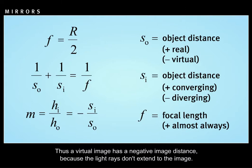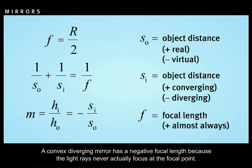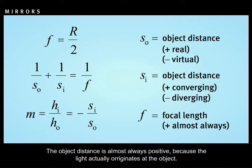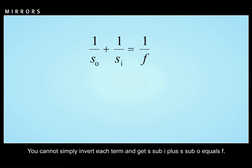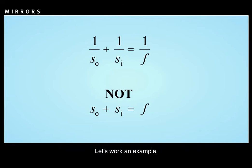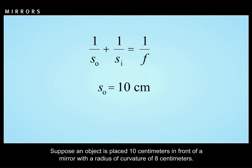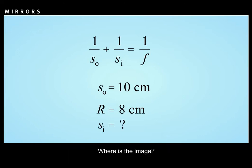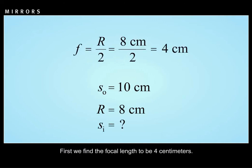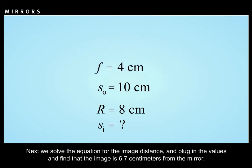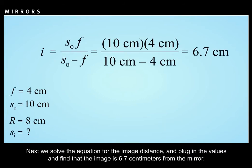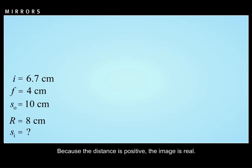Thus, a virtual image has a negative image distance because the light rays don't extend to the image. A convex diverging mirror has a negative focal length because the light rays never actually focus at the focal point. The object distance is almost always positive because the light actually originates at the object. Be careful when using this equation — you cannot simply invert each term to get S sub I plus S sub O equals F. For example, suppose an object is placed 10 centimeters in front of a mirror with a radius of curvature of 8 centimeters. The focal length is 4 centimeters, and solving the lens equation gives an image distance of 6.7 centimeters from the mirror. Because the distance is positive, the image is real.